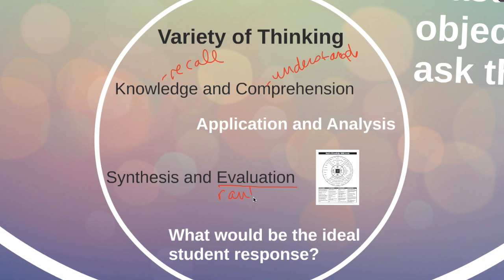Evaluation is whenever you come up with rankings. For example, if you're talking about the American Revolution — which cause was the top cause? Or if you're looking at theater and stage movement, what type of movement is most important in invoking emotions during a play? This is where you get students to think about what's best or worst, or use some type of spectrum. It's really easy to get that evaluation level in there.